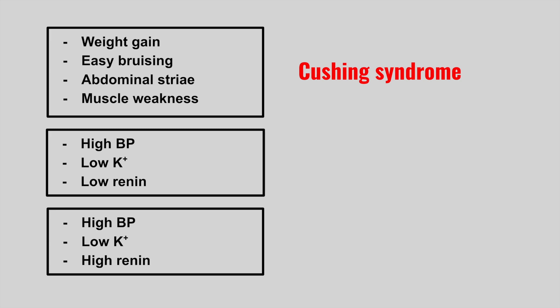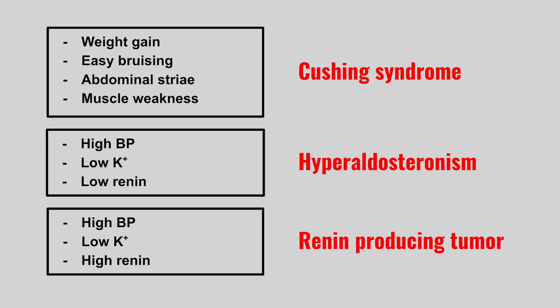The next patient has high blood pressure, low potassium, and low renin — this is hyperaldosteronism. Compare this to the next patient with high blood pressure, low potassium, but high renin — this is a renin-producing tumor. When renin is low with high aldosterone, it's primary hyperaldosteronism; when both renin and aldosterone are high, it's secondary hyperaldosteronism.